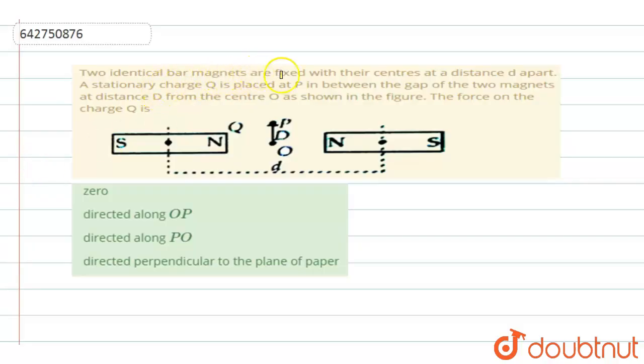Two identical bar magnets are fixed with their centers at a distance d apart. A stationary charge q is placed at P in between the gap of the two magnets at distance d from the center O as shown in the figure. The force on the charge q is.